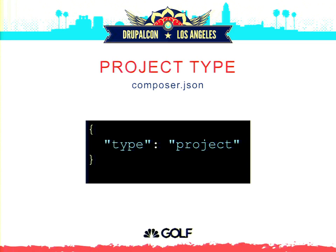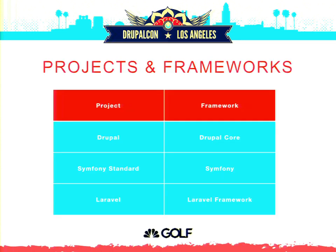It's best practice to give every composer file a name. There's a special type called 'project,' meaning this is a project — not a library, not Drupal Core — it's a starting point. Some special commands work with projects. The gist is that type-project things are usually intended as a starting point. So Symphony Standard requires Symphony, Laravel requires the Laravel framework, and for us Drupal requires Drupal Core. If you look in the root composer.json you'll see it's type 'project.'